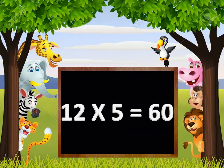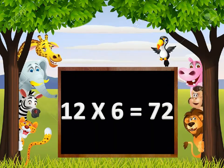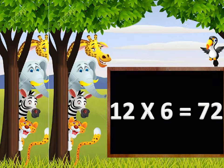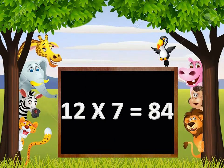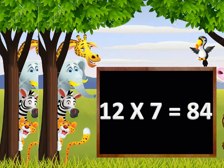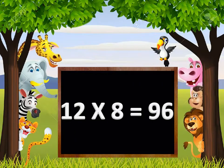12 times 5 is 60. 12 times 6 is 72. 12 times 7 is 84. 12 times 8 is 96.